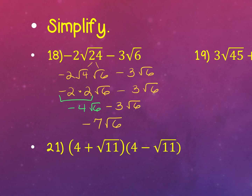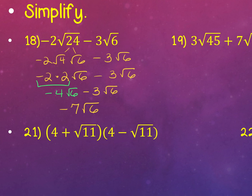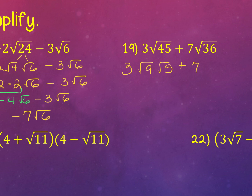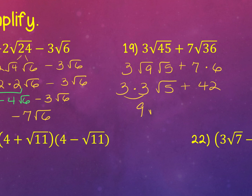For number 19, break down the square root of 45 and the square root of 36. For 45: 9 times 5. For 36: it's a perfect square, 6 times 6, so pull out a 6. Square root of 9 is 3. Multiply 7 and 6 to get 42, and 3 and 3 to get 9. The 42 does not have a square root of 5, and I cannot add 42 and 9 because they don't share the same radical.